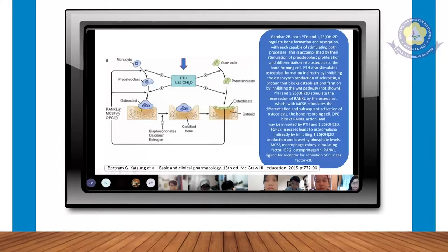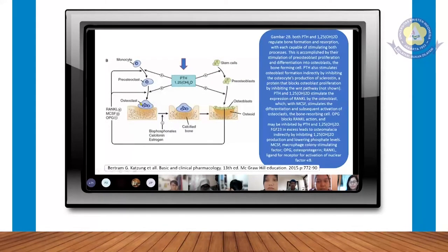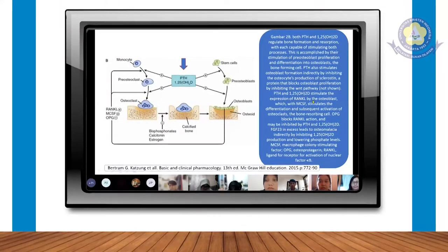Kalau bifosfonat, osteoclastnya sudah terbentuk. Dia kerjanya menghambat osteoclast untuk merusak tulang lebih lanjut, atau kita bilang resorpsinya lebih lanjut dihambat oleh bifosfonat. Tapi dari sel osteoclastnya tidak diganggu. Sampai situ, apakah bisa dipahami?